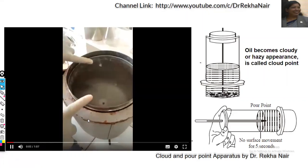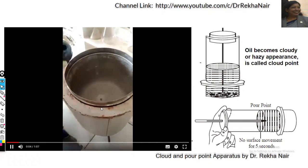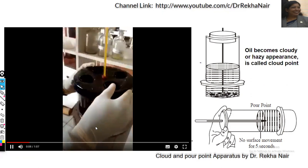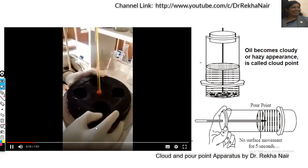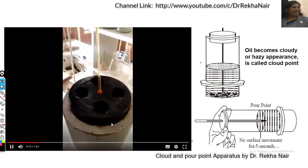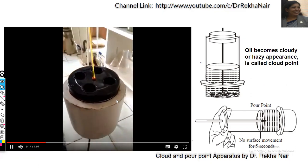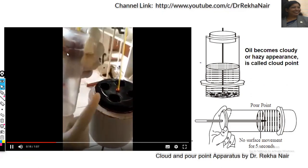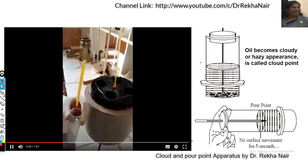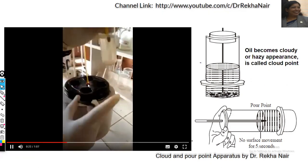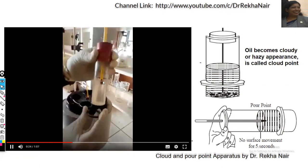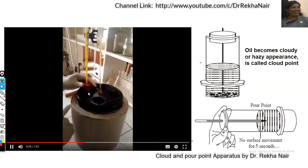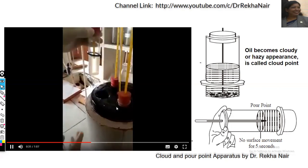This is the cloud and pour point apparatus. Here we put the water. Calcium chloride and ice mixture will be put inside the water so as to lower the temperature. This is a flat bottom test tube. The oil will be filled up to the mark and kept for cooling.